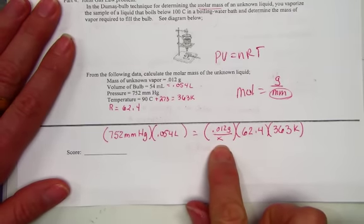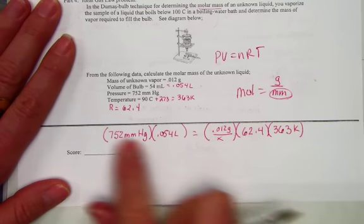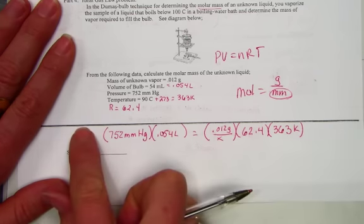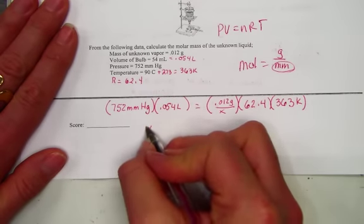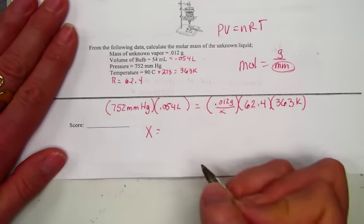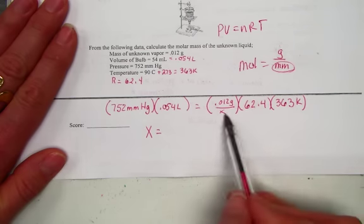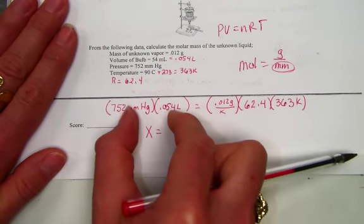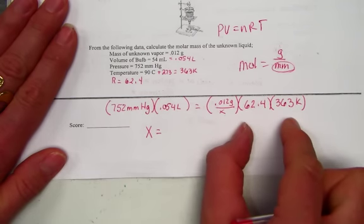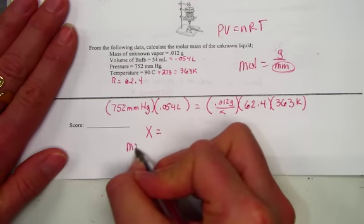Following the steps to solve for x, we begin by multiplying both sides by x, so x comes over to this side. Remember x represents molar mass. If we multiply both sides by x and bring the P and V under the grams times R times T, we've isolated the molar mass.